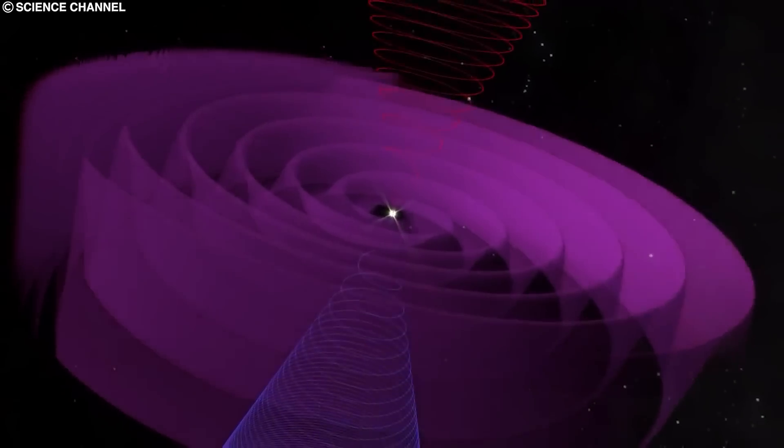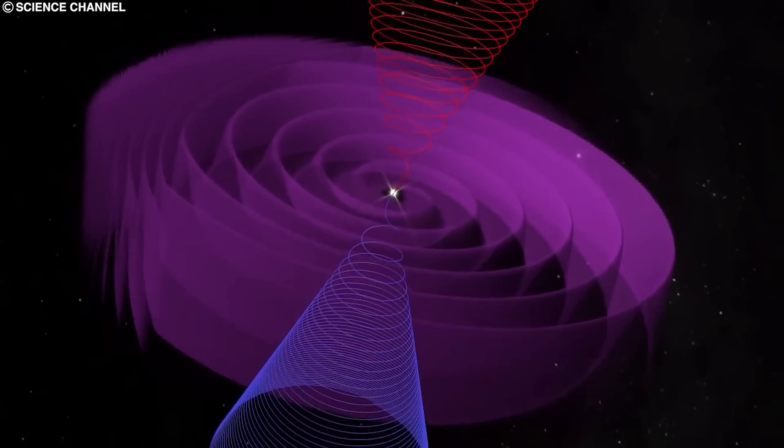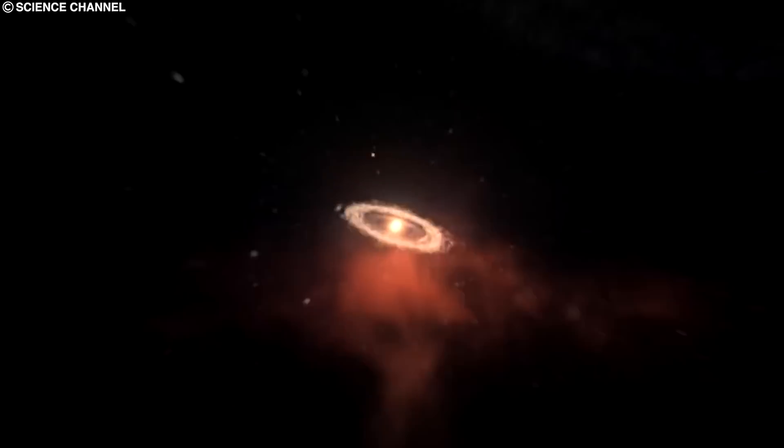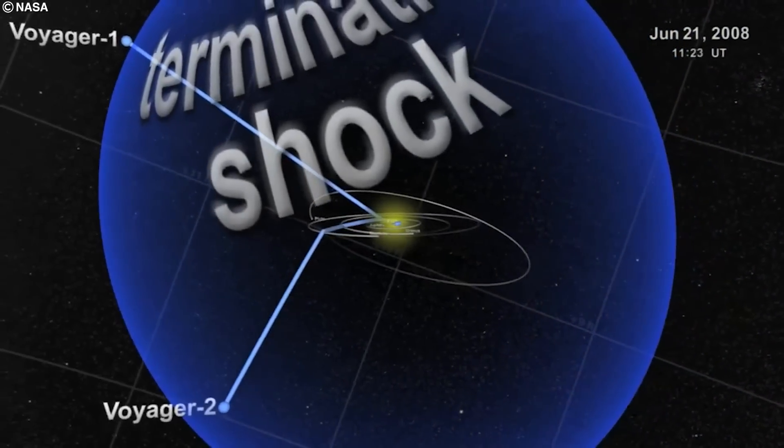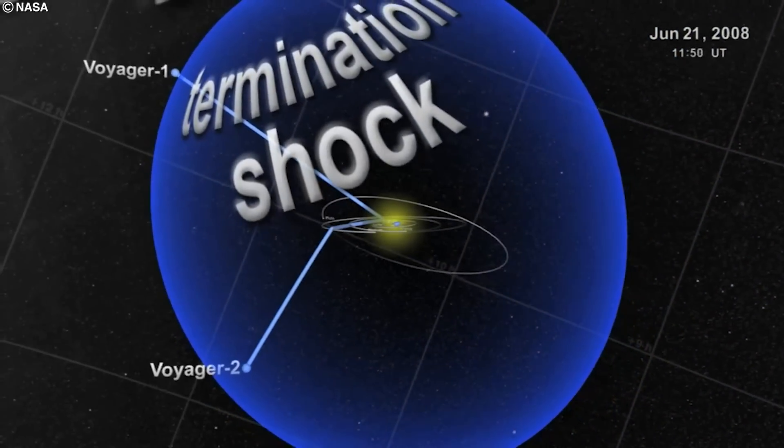This could be the most plausible explanation as the heliosphere surrounding our solar system also acts as a barrier that keeps the density of cosmic rays within the solar system significantly lower than the density just outside the barrier as recorded by Voyager 1.